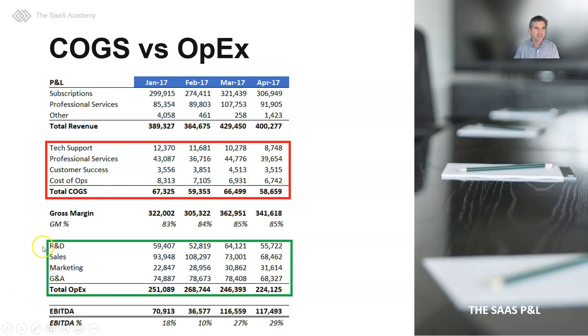In the green box, we have our operating expenses or OPEX: research and development, our dev team, sales, marketing, and G&A — including HR, finance, accounting, IT, etc.